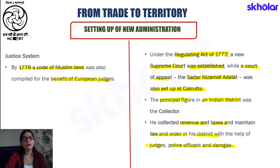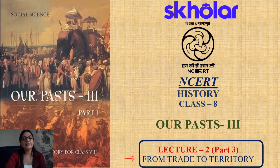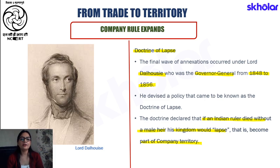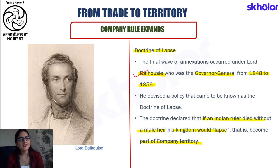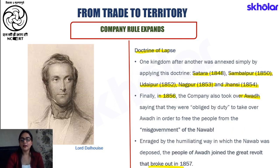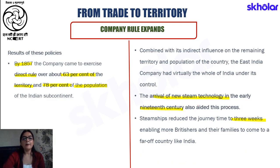We have now completed our discussion on the entire chapter 'From Trade to Territory.' Let's take a quick recap. We started with the Doctrine of Lapse, which along with the Subsidiary Alliance and Paramountcy Policy was an instrument of accession used by the East India Company. The Doctrine of Lapse was put forward by Lord Dalhousie: if a ruler died without a natural heir, the kingdom would be annexed. States annexed under the Doctrine of Lapse included Satara, Sambalpur, Jhansi, and Awadh.